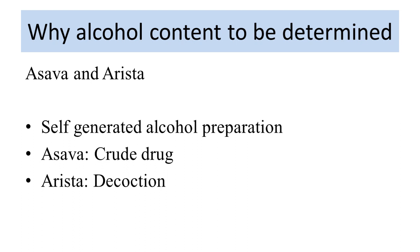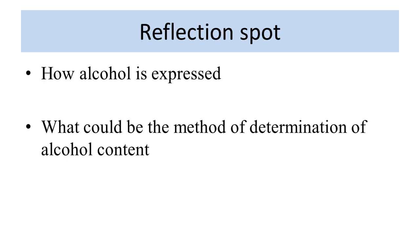Kasaya is prepared by boiling the herbal drug in water for 15 to 20 minutes and then filter it. Again boil the drug for second time with same amount of water, filter and keep that preparation that is called as kasaya or decoction. Now, what is the reflection point? Let us see how the alcohol is expressed. What could be the method of determination of alcohol content? Please pause and write what could be the method of preparation.